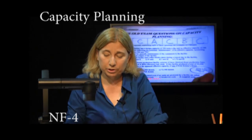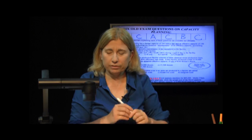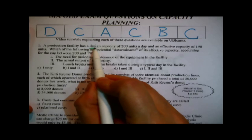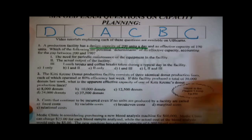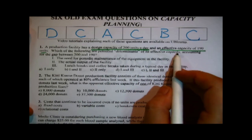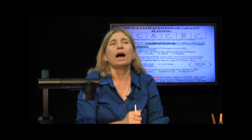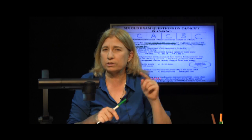Like the chapter, these capacity planning questions are a mixture of qualitative and quantitative. A production facility has a design capacity of 200 units a day and an effective capacity of 190 units. Which of the following are potential determinants of its effective capacity, accounting for the gap between 200 and 190? This question looks quantitative because it quotes numbers, but it's actually more conceptual — it's asking for the determinants of effective capacity, the reason you only get 190 units out of something designed for 200.